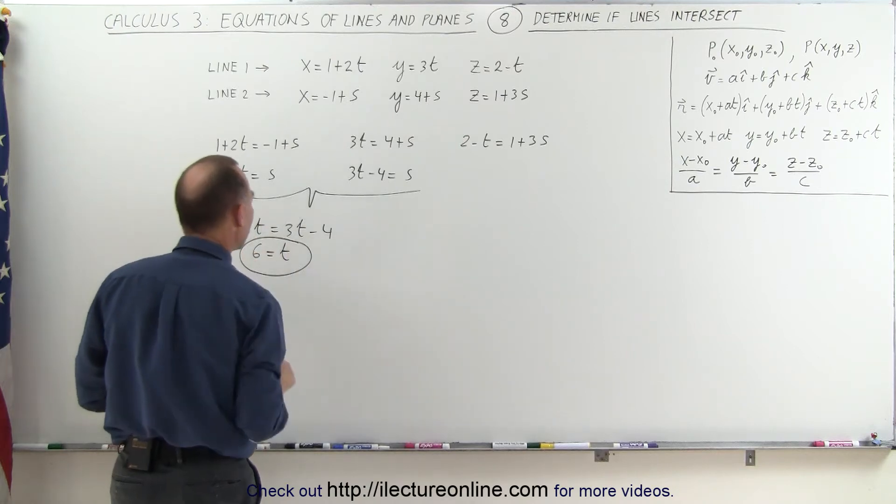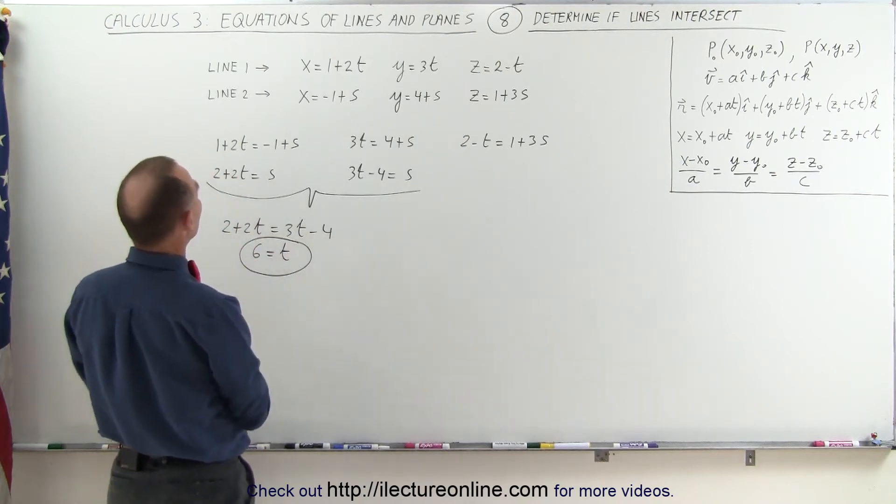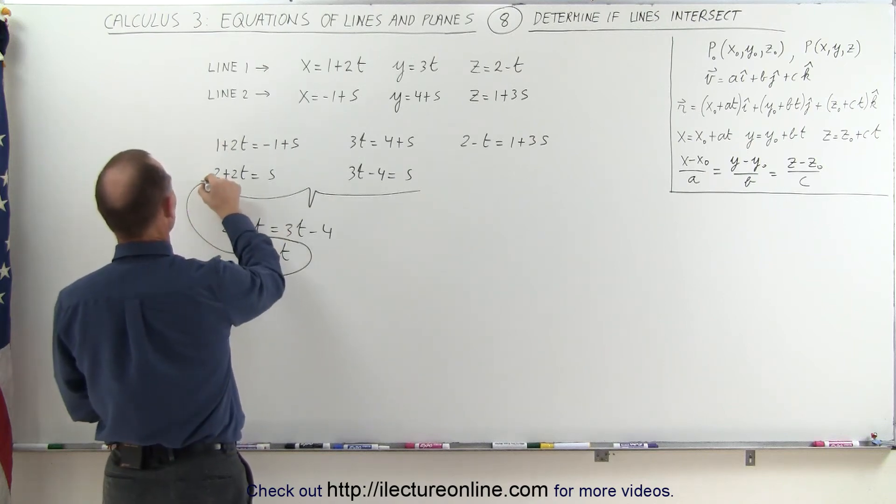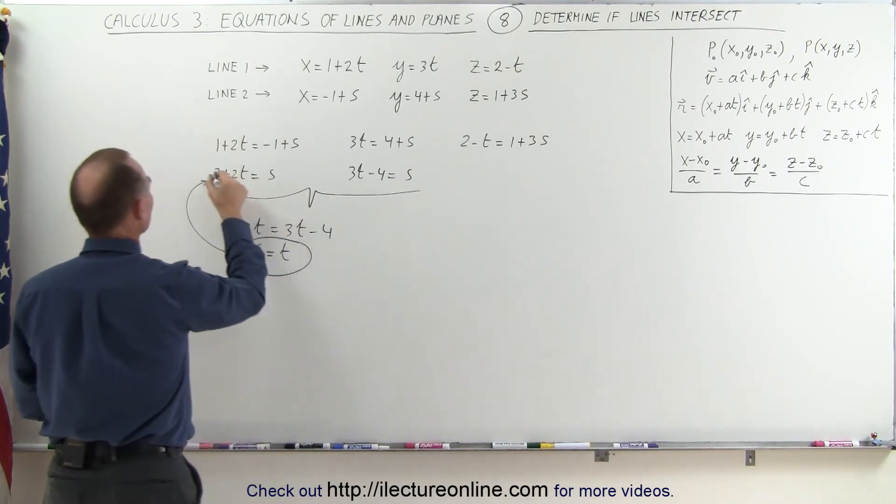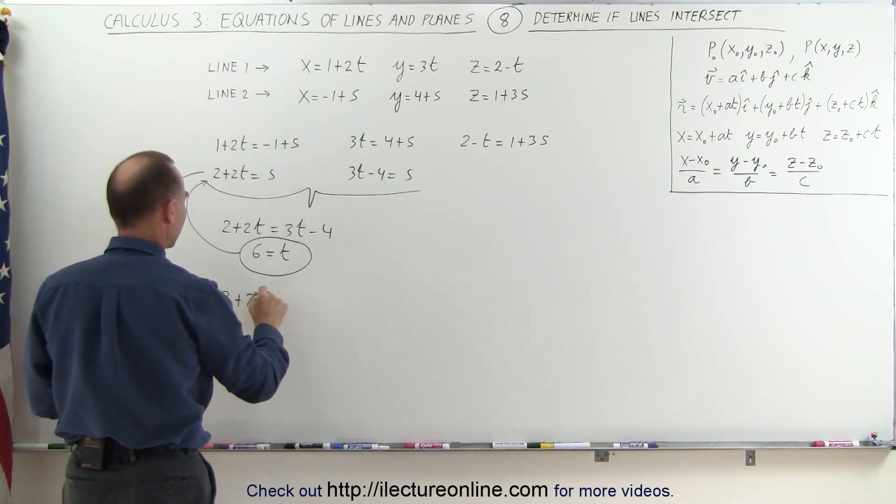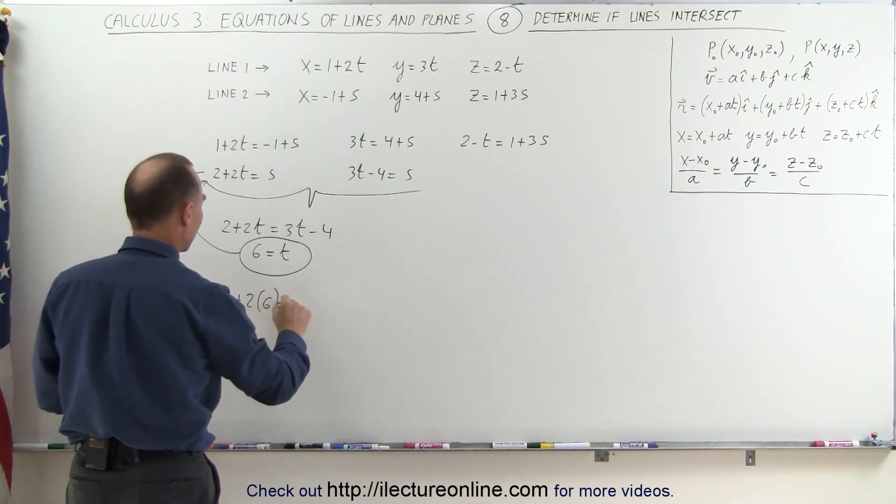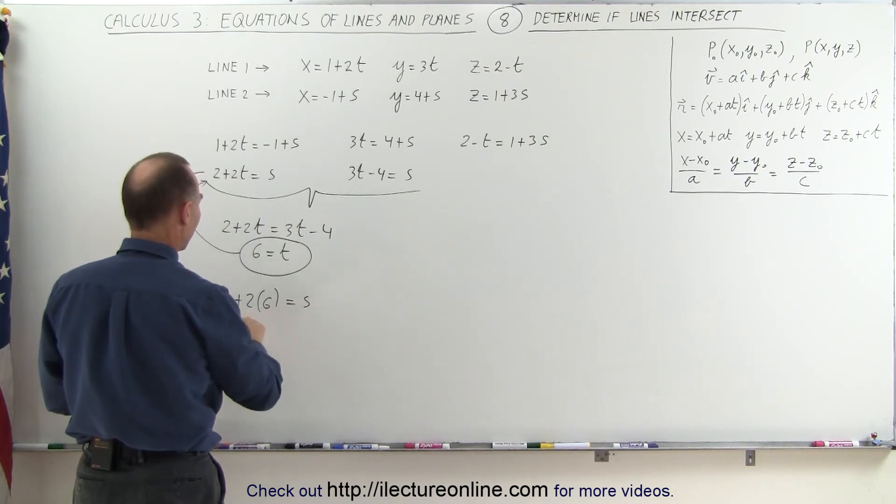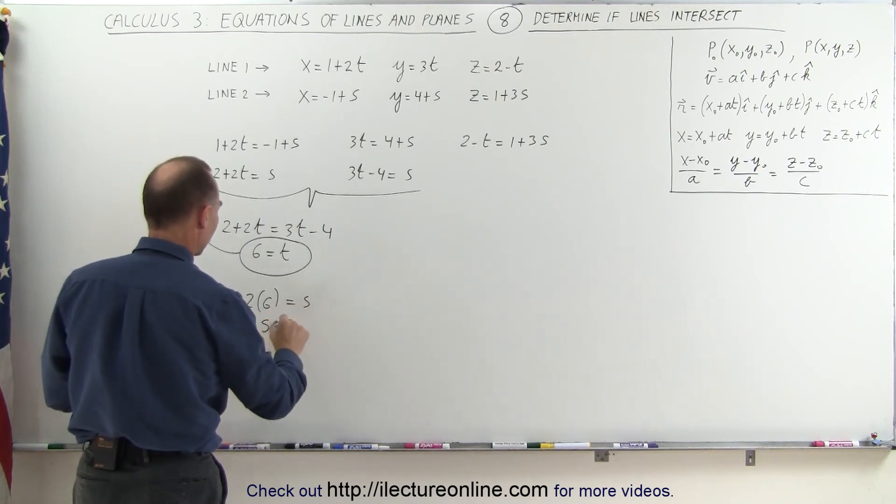So I have a value for t. I plug that into one of my other equations, let's try this one right here, because I have s in terms of t. Bringing this one down here, I can write 2 plus 2 times t, which is equal to 6, is equal to s. That's 12 plus 2 is 14, s equals 14.